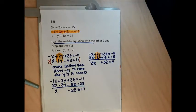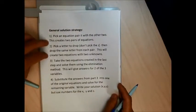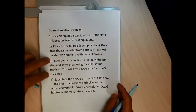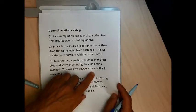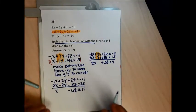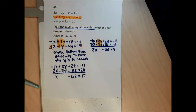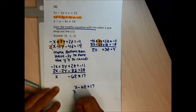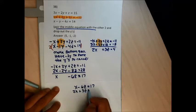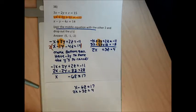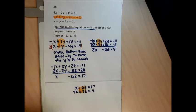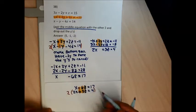I've done the elimination method twice now. I picked the middle equation, paired it with the other two, picked y to drop out, and dropped it from each pair. Now step three: take the two equations created — x minus 6z equals 17, and 2x plus 3z equals 4 — and use the elimination method to solve them. I'll eliminate the z's by multiplying the bottom equation by 2 to get positive 6z to cancel with the negative 6z.